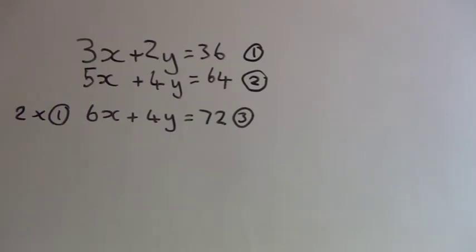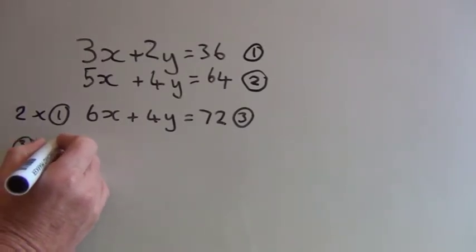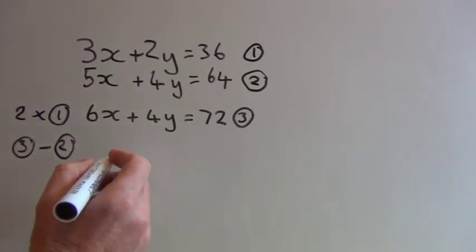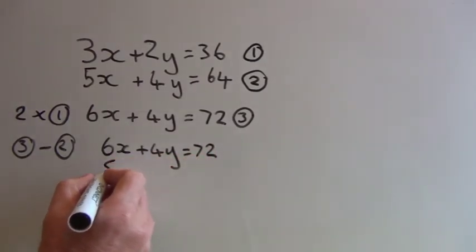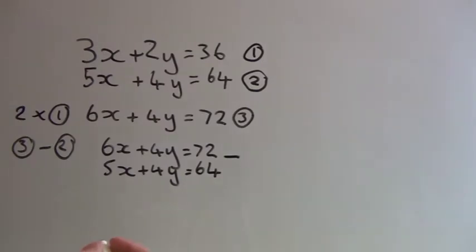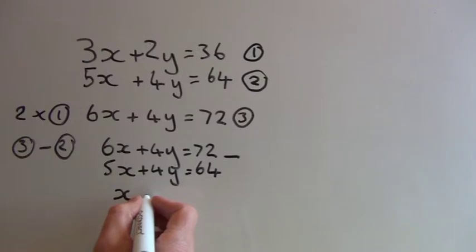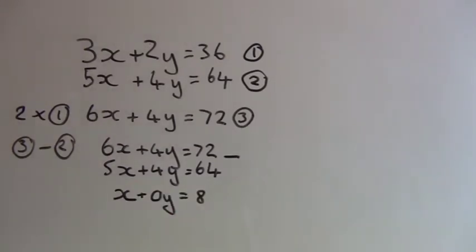Now if equation two is subtracted from equation three, the terms involving y will be eliminated. So subtracting equation two from equation three: 6x + 4y = 72 minus 5x + 4y = 64. Subtracting those gives us x plus 0y equals 8. So we now have our value for x.